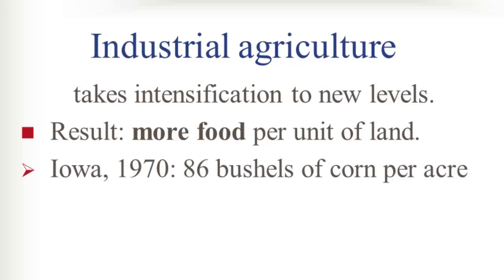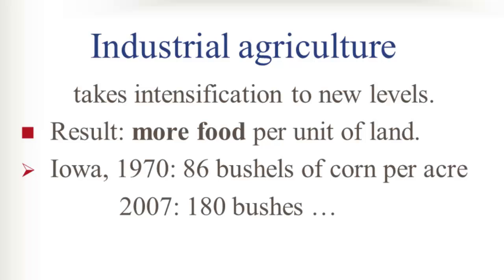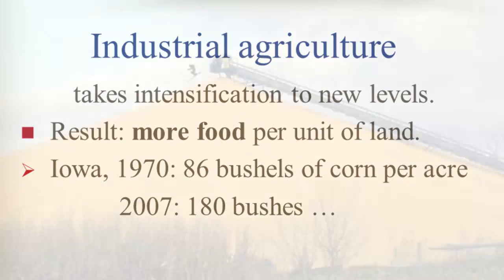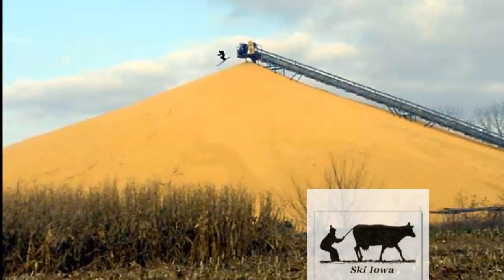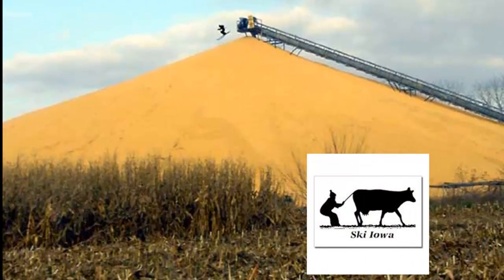To illustrate that doubling since the mid-1950s: in 1970 in Iowa, 86 bushels of corn were produced per acre. By 2007 it was 180 bushels. And this meant that you could start skiing in Iowa — giving a whole new meaning to the idea of skiing in Iowa.